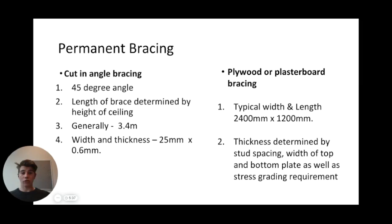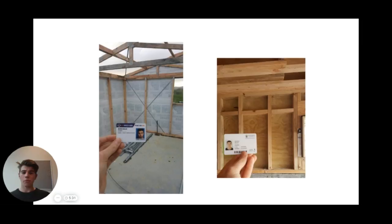These are photos of the on-site bracing. On the left, cut and angle bracing forms a 45-degree angle, and on the right, 6mm plywood bracing is attached to the external frame.